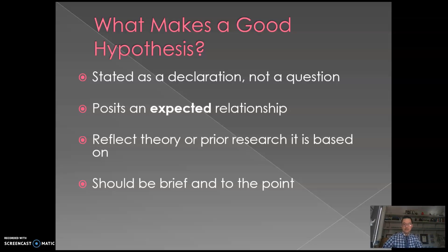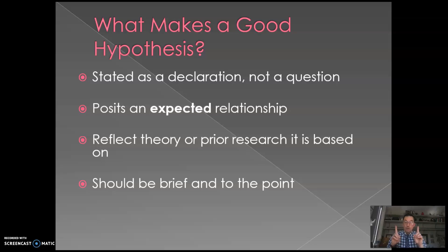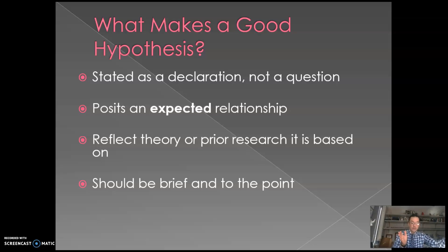Hypotheses also need to be direct and to the point. Some people think longer sentences are better — that's not true here. Get to the point: 'biological sex impacts people's IQ' or even 'women are smarter than men' — done, that's a hypothesis. Also, only hypothesize one thing at a time. There's nothing wrong with having multiple hypotheses in a study, but separate them. Don't say 'women are smarter and stronger than men' — say hypothesis one: women are stronger than men; hypothesis two: women are smarter than men.